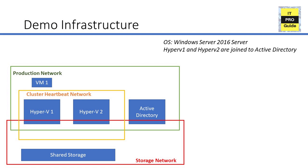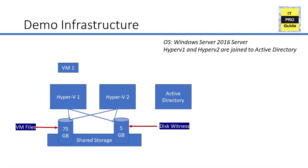We are going to create two iSCSI volumes — called LUNs — in shared storage and connect them to Hyper-V1 and Hyper-V2. One LUN is for virtual machine files and the other is for disk witness. Since we have two Hyper-V hosts, we need an odd number, so we'll use a disk witness. Each Hyper-V host will have one vote and the disk witness will also have one vote. We'll start with disk witness, then I'll show you how to change to file share or Azure cloud witness.